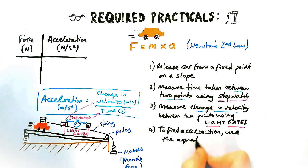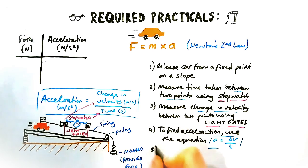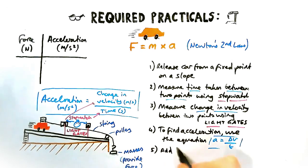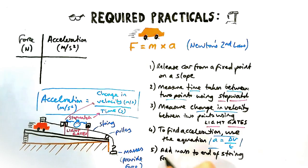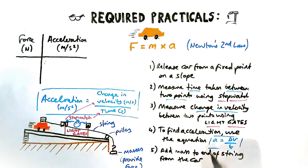This is the easy bit because we've already got it written down. We're going to use the equation acceleration equals change in velocity divided by time to calculate the acceleration. Next is we're going to vary the force. To do that we are adding masses to the end of the string from the car and then we repeat. So we add another one, another one, and repeat parts one, two, three, and four.